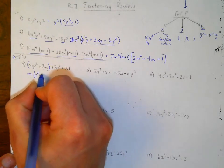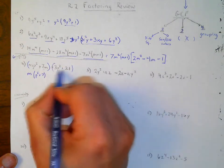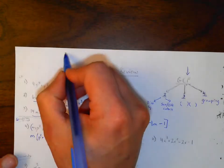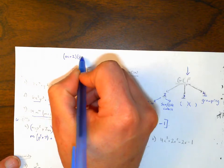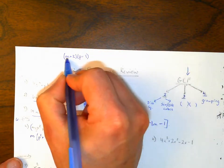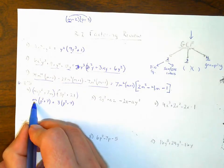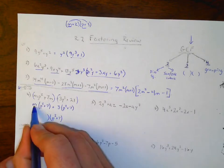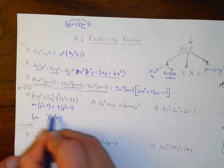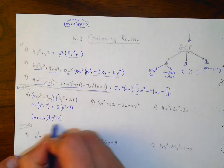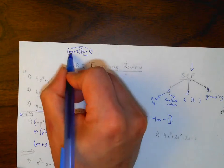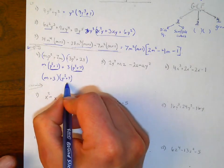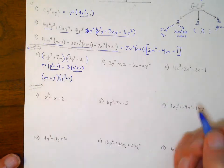From the first group, I can take an m out, leaving p²+7. From the second group, I can take a 3 out, also leaving p²+7. Think about multiplying something through — if I have (m+2)(p+3), the m is distributed to both terms. Here, m is distributed to p²+7, and 3 is also distributed to p²+7. For this method to work, these two binomials have to be the same. That gives one factor (p²+7), and m and 3 are collected as (m+3). So it's factored.